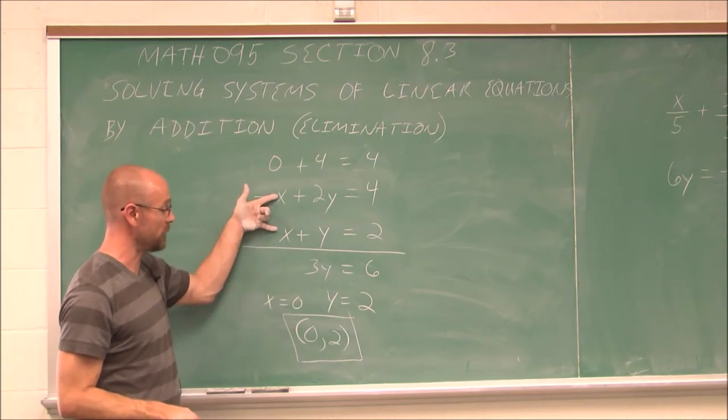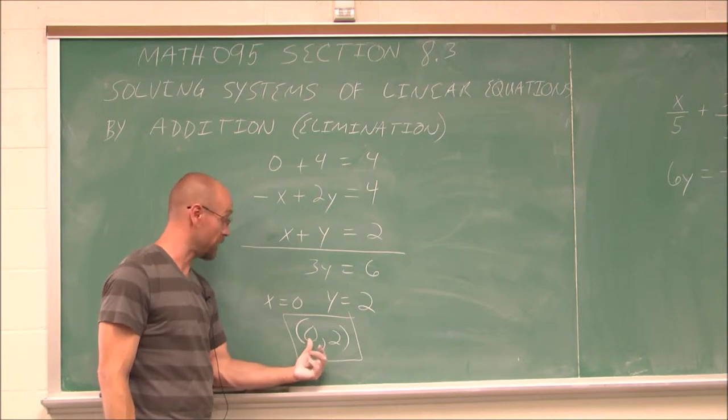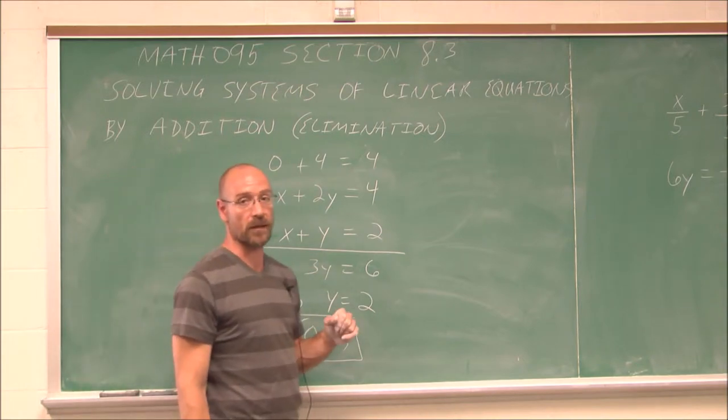So this works in both equations. We have a consistent system with the solution (0, 2). These two lines intersect at the point (0, 2), which just happens to be a y-intercept when x is 0. All right. Let's look at another example.